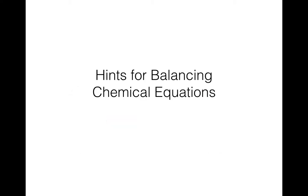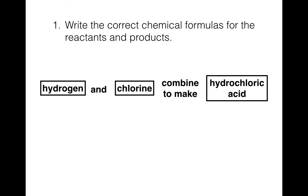The notes for today — all I'm going to do is go through hints for balancing. Some of them are steps, and some are just tips for tricky situations. So the first step: make sure you have the correct chemical formulas for the reactants and the products. If you don't get the right chemical formulas, a lot of times it will be impossible to balance. For example, hydrogen and chlorine combine to make hydrochloric acid — we need to go through and make sure we know all the formulas.